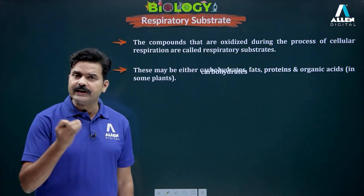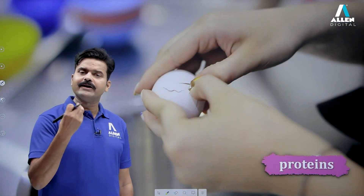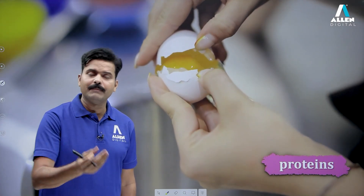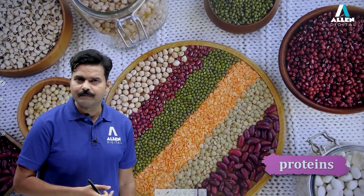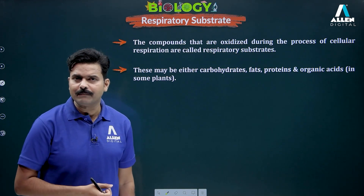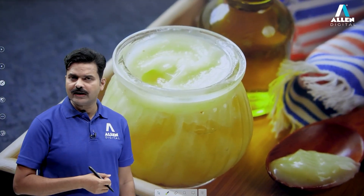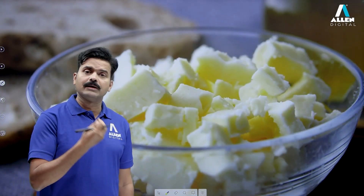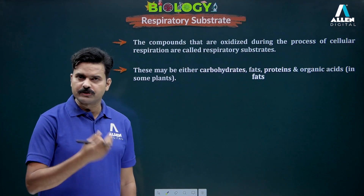Proteins are also present as respiratory substrates in our diet. If we eat eggs or pulses, we eat protein — these are all protein sources. Fats are also present in our diet. If we eat oil, we eat fat. If we eat ghee, we eat fat. If we eat butter, we eat fat. These are all respiratory substrates.